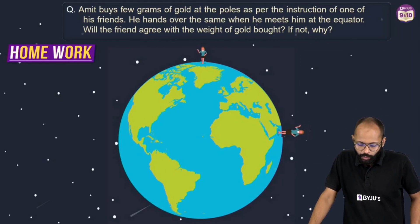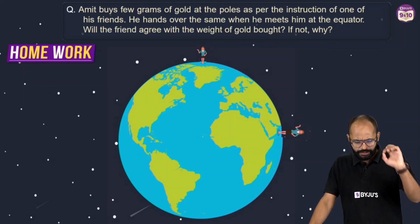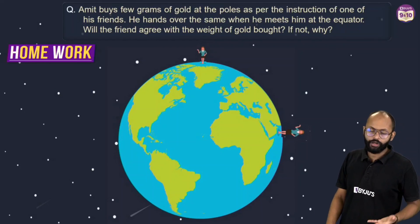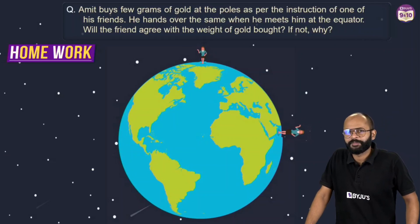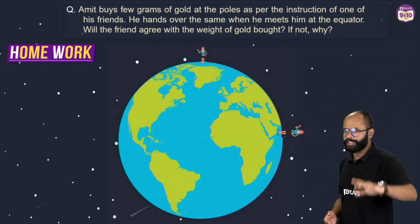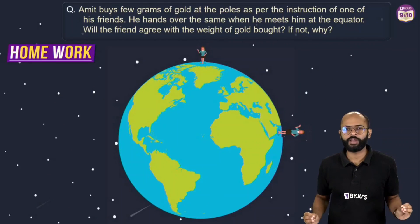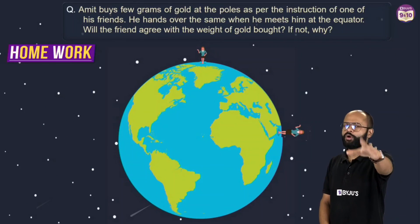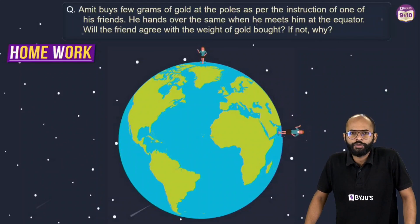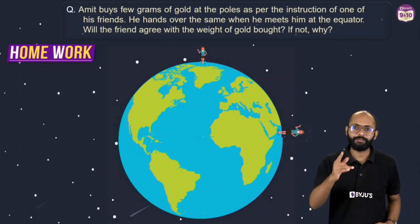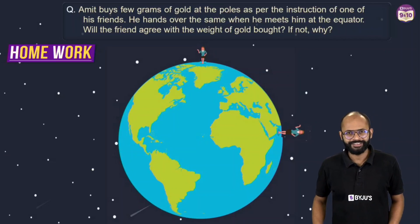Homework question: Amit buys a few grams of gold at the poles, as per his friend's instruction. He hands over the same gold when he meets his friend at the equator. Will the friend agree with the weight of the gold? If not, why? It's an NCERT question — tell me your answer in the comments! I hope you liked this short, crisp, and clear concept bites session. Like, share with friends, subscribe, and press the bell icon. See you next time!